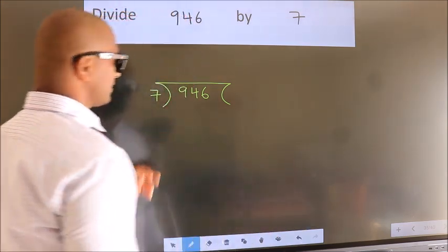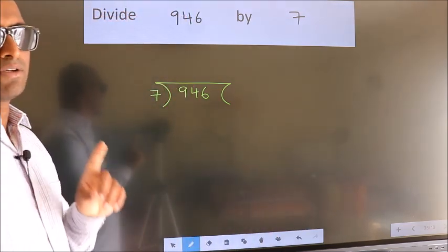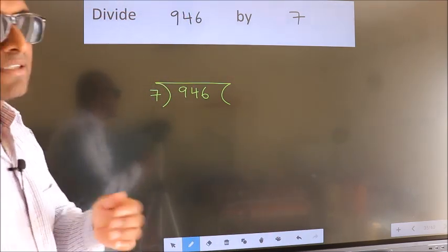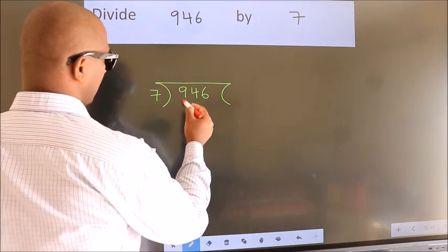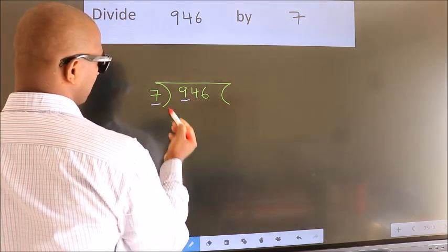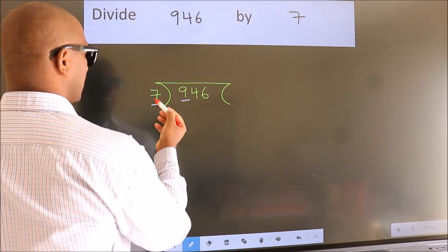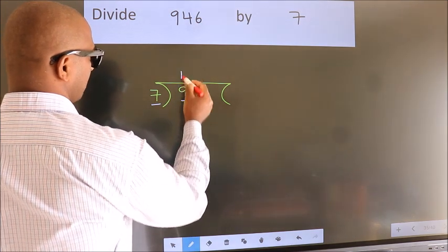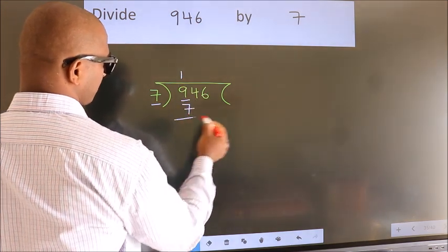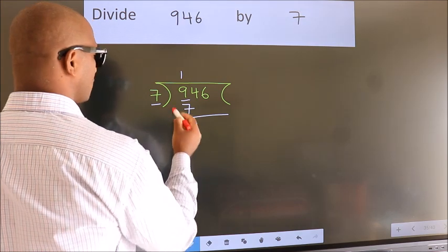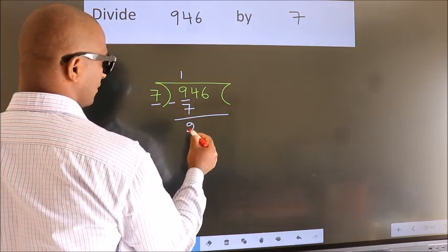This is your step 1. Next. Here we have 9. Here 7. A number close to 9 in 7 table is 7 ones, 7. Now we should subtract. We get 2.